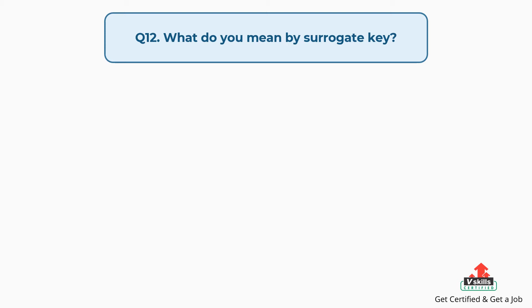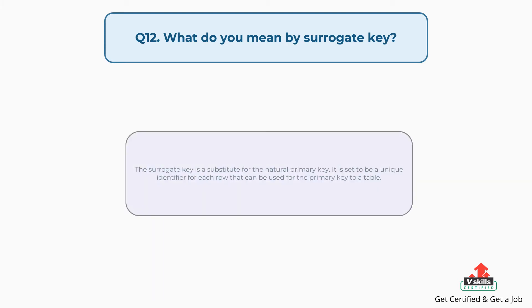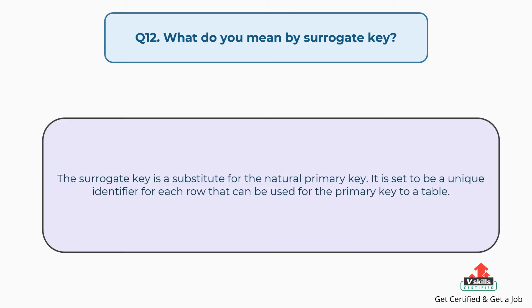Question number twelve: What do you mean by surrogate key? The surrogate key is a substitute for the natural primary key. It is set to be a unique identifier for each row that can be used as the primary key to a table.